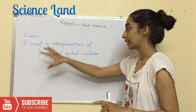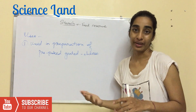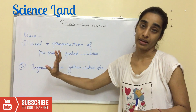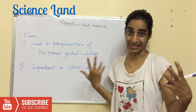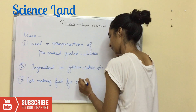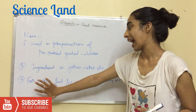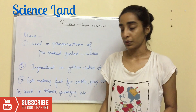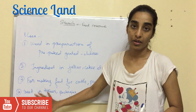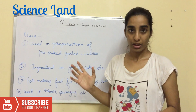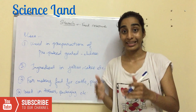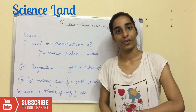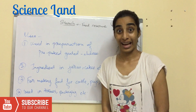Let's look at the uses of starch. First, it is used in the preparation of pre-packed grated cheese to reduce sweating and binding. Second, it is used as an ingredient for making jellies, cakes, and so on. Third, starch is used to make food for cattle, pigs, and poultry. Fourth, starch products are used in paper bags, tissues, and packaging — improving the printability and writing properties of paper.